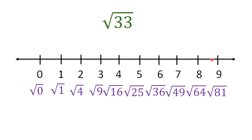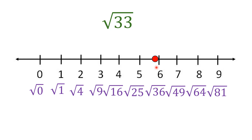Finally, square root of 33. It falls in between square root of 25 and square root of 36, so it's between 5 and 6. And 33 is way closer to 36 than to 25, so we put it closer to 6. We just estimate — we cannot get the exact location of these irrational numbers. That's the last example; I hope you learned something from this video.